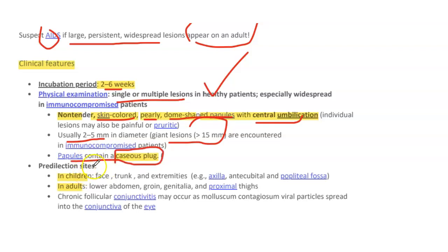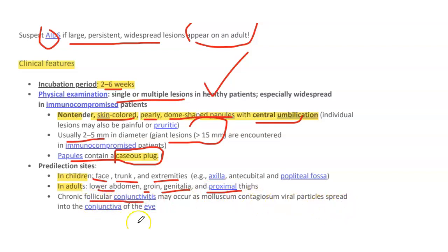Sites: in children, lesions are usually on the face, trunk, and extremities, while in adults they appear on the lower abdomen, groin, genitalia, and proximal thighs. Chronic follicular conjunctivitis may occur as molluscum contagiosum viral particles spread into the conjunctiva, resulting in follicular conjunctivitis.